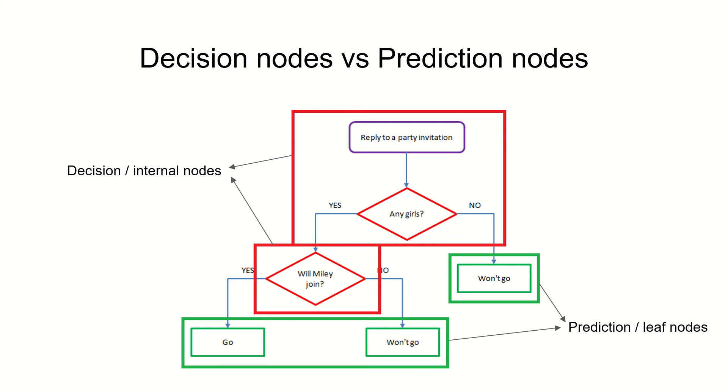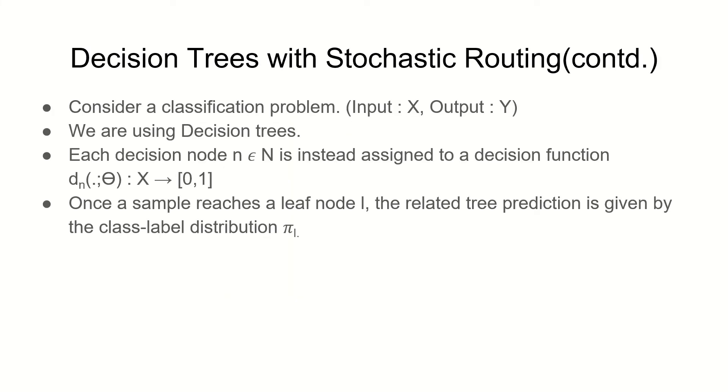This is where the math starts, so bear with me. Instead of normal nodes, at every decision node we implement a decision function dn of theta that takes x, a sample, and gives output either 0 or 1. Once a sample reaches a leaf node L, there we have a class label distribution pi_L for tree prediction.